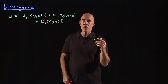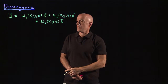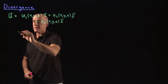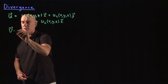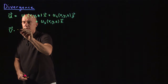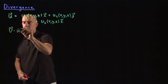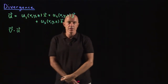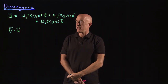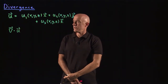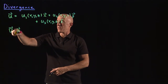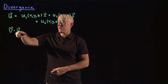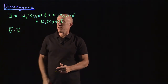I want to define the divergence of u using the del operator. The divergence of u is what we call del dot u. This is using a differential operator with a dot product with a vector field.